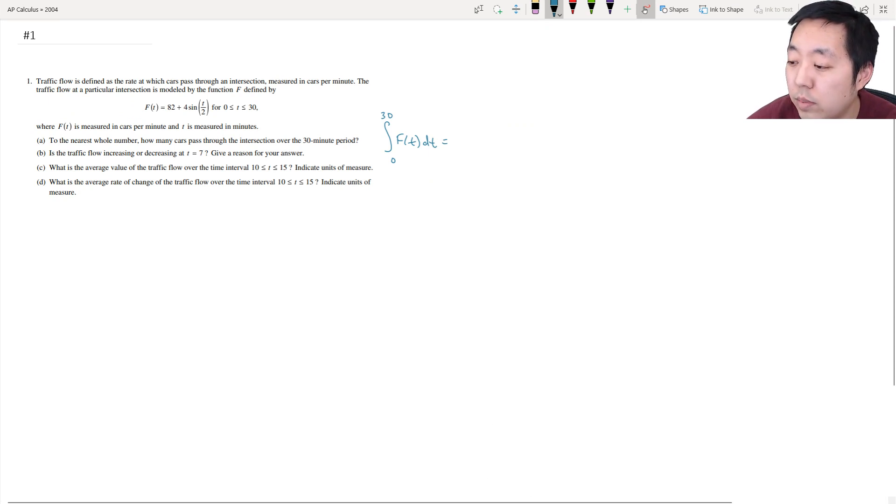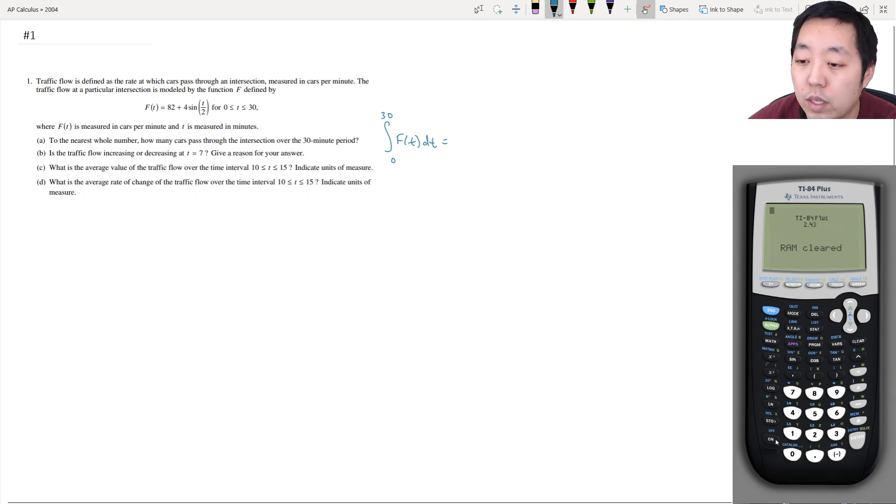We're going to use the calculator. You actually don't need to use a calculator because you can technically integrate this one by hand, but I think it's good to know how to compute the integral function. I type in the function: 82 plus 4 sine x divided by 2. We're going to integrate over x from zero to thirty, and it's going to be 2,474 cars.